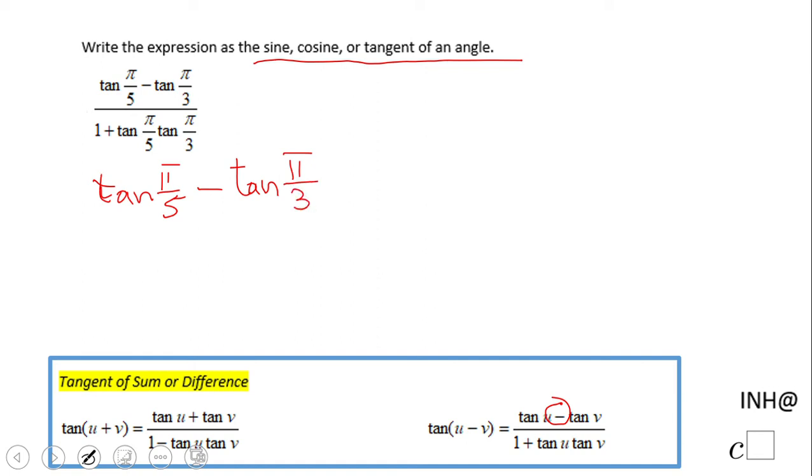Another thing to look at is this plus. That's another way to identify which one you can use. So now we're going to rewrite this as a tangent of difference: tangent of pi over five minus pi over three.